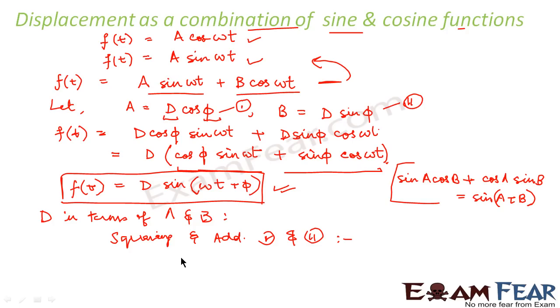If you square equation 1, you will get A² is equal to D² cos² φ. If you square equation 2, you will get B² and on the right hand side, you will get D² sin² φ. And then, you add these two equations. So, you add them.